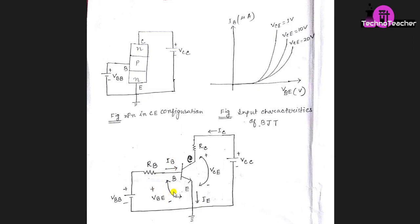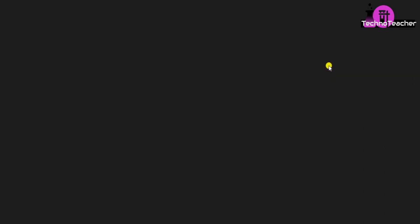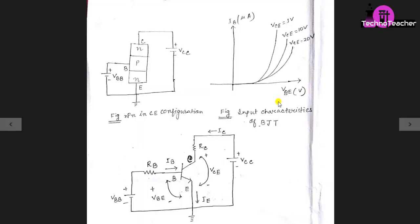Now come to this figure. This figure shows the input characteristics of BJT. Here for different values of VCE, IB versus VBE curves are shown. We can notice one thing here that VCE has a range of values and similarly VBE also has a range of values.